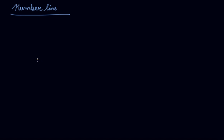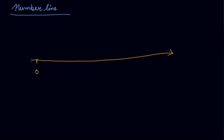Take a scale and draw a straight line. After that, mark this as 0. On the left side there are negative numbers — minus 1, minus 2, minus 3.